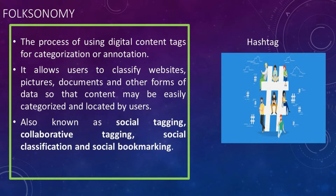Folksonomy is the process of using digital content tags for categorization or annotation. It allows users to classify websites, pictures, documents, and other forms of data so that content may be easily categorized and located by users. Folksonomy is also known as social tagging, collaborative tagging, social classification, and social bookmarking. Popular networking sites such as Twitter, Instagram, Facebook, and others use tags that start with the pound sign or hash — also referred to as a hashtag.